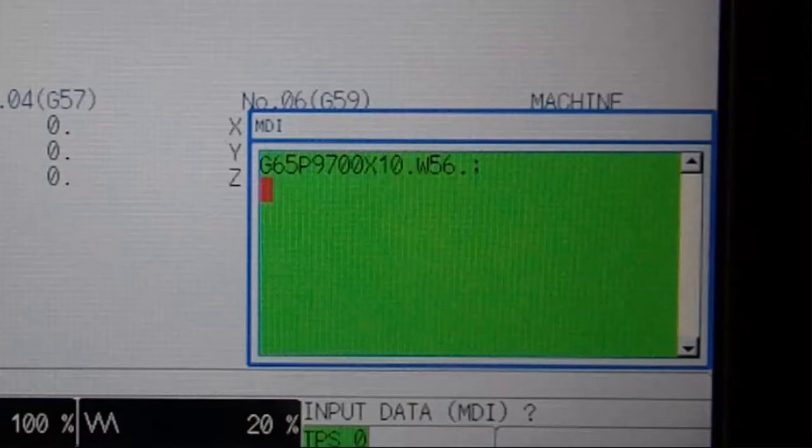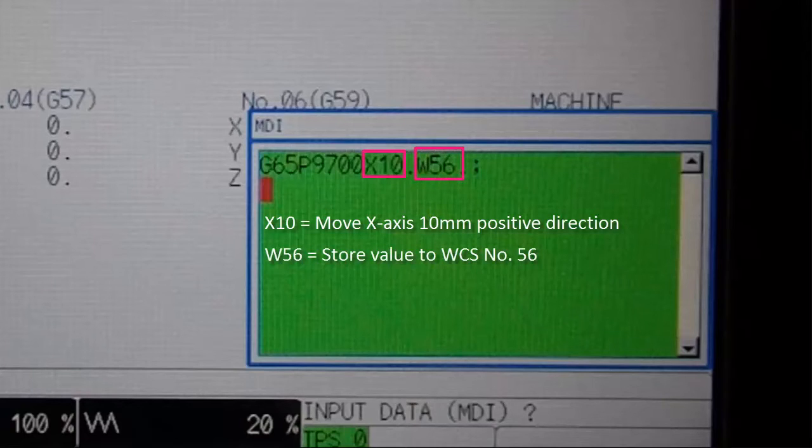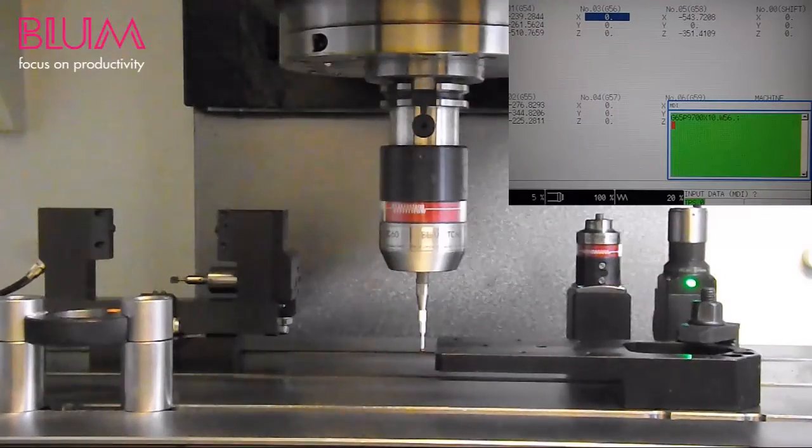In the case of referencing the workpiece's x-axis zero point, we enter an x10, instructing a move of 10 millimeters in the x-axis, and a w56, instructing the control to store the result to work coordinate location number 56. Now execute the program.